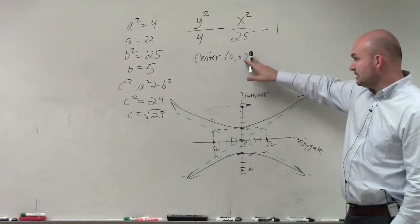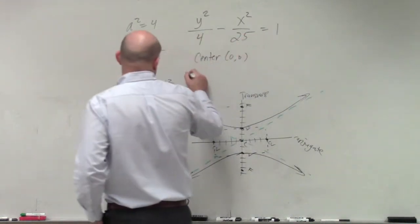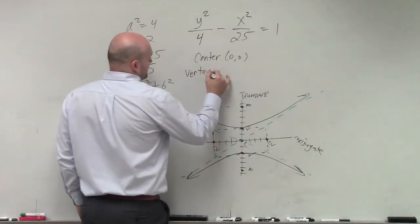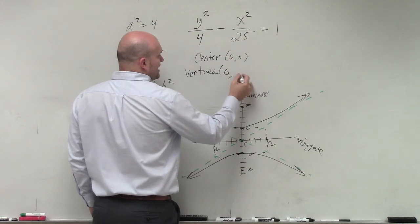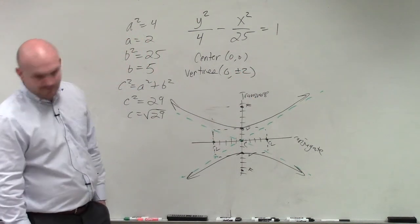So we know the center is 0, 0. I went up or down to find my vertices, correct? So the equation of my vertices is going to be 0, plus or minus 2. And we can just leave it like that for a problem like this.